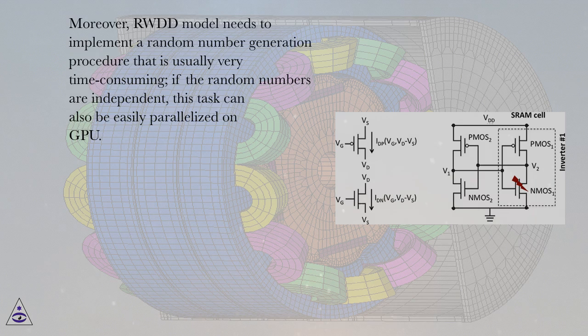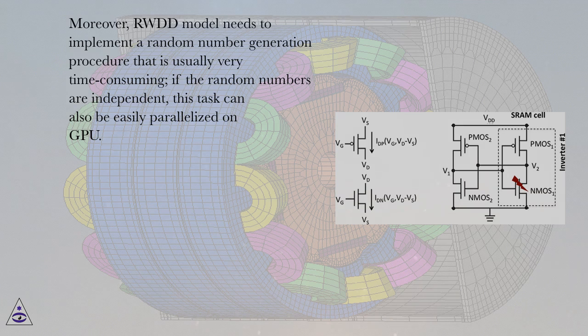Moreover, RWDD model needs to implement a random number generation procedure that is usually very time consuming. If the random numbers are independent, this task can also be easily parallelized on GPU.